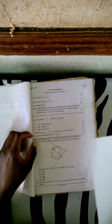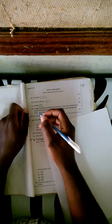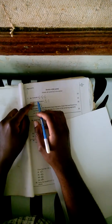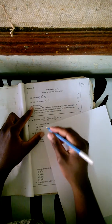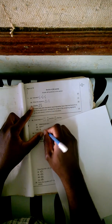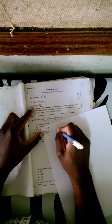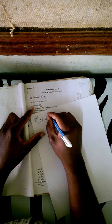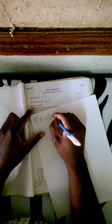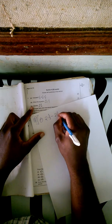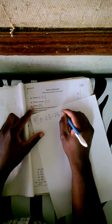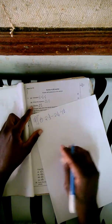Hi guys, this is the 2012 examples paper, syllabus D. I'm starting with question 1, question 1a. It says evaluate 2 and 1/3 minus 2 and 1/4, divided by 1 and 1/2.